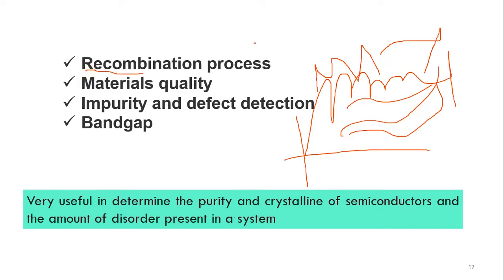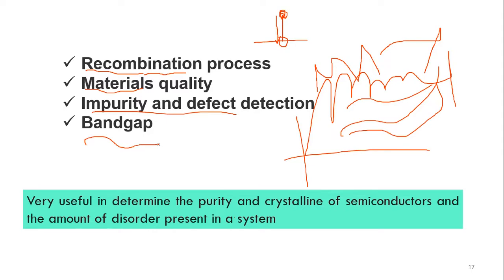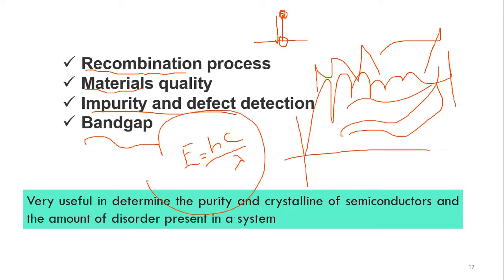There is also the recombination process — when an electron is excited, there is a hole left behind, and the electron can come back and recombine. The recombination process is unwanted and plays a bad role in semiconductors and solar cells. PL also explains material quality, impurities, and defects. The band gap can be easily found from photoluminescence using the formula E = hc/λ. This was all about photoluminescence, and further we will explore the concepts of singlet and triplet states.